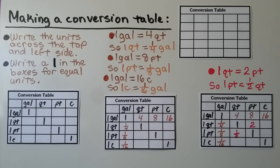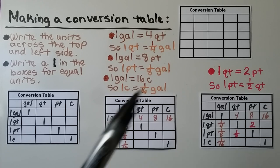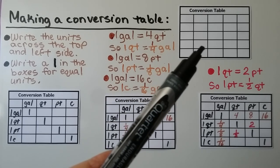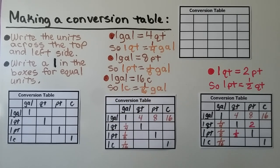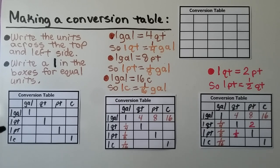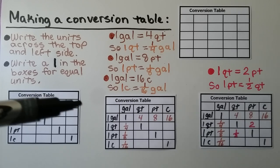We need a conversion table for liquid capacity. For customary measures, we start with a blank conversion table and write the units across the top and on the left side. On the left side we have one gallon, one quart, one pint, and one cup. Across the top it says gallon, quart, pint, cup.